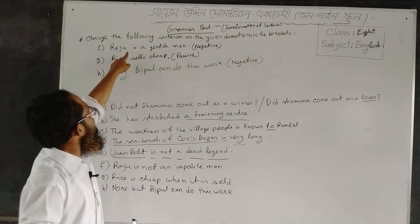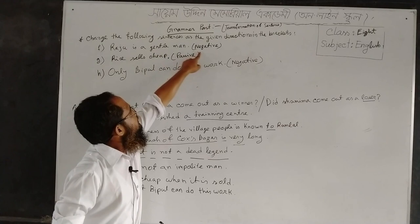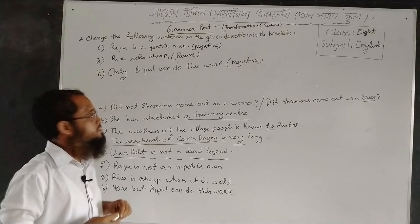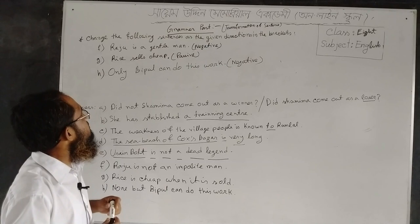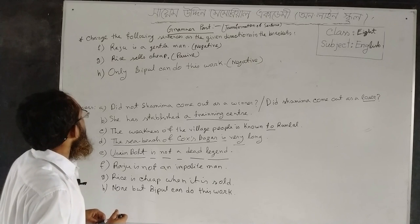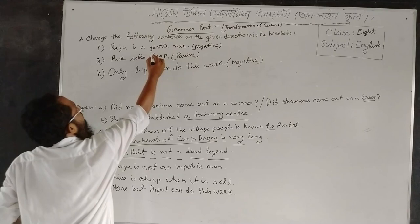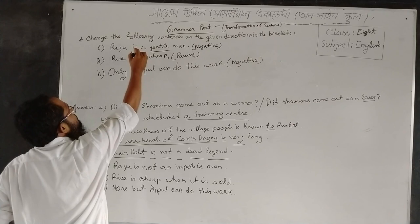Sentence F: Raju is a gentleman. Negative is in the bracket, so you have to make it a negative sentence. It's an affirmative one; you have to change it as a negative one. To do this, you have to follow some rules. Here you have to use the antonym of the word 'gentle' and you have to put 'not' after the be-verb 'is'.